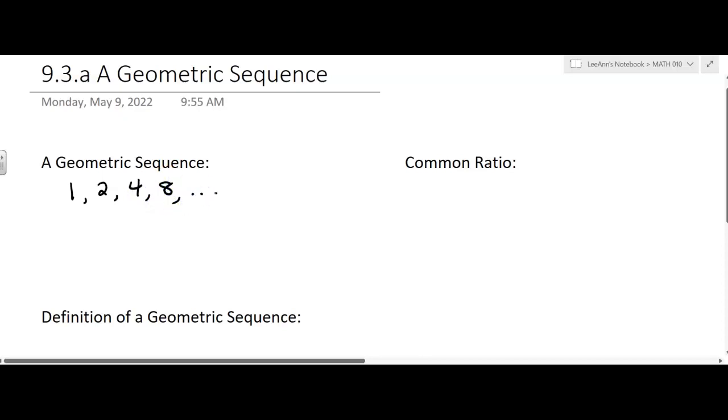You probably can predict the next term, right? If you take any two consecutive terms and do a division, you're going to get what's called the common ratio.